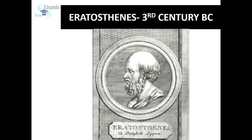At times when most people were still trying to figure out whether the Earth is flat or spherical, geniuses like Eratosthenes were able to measure the size of the Earth and also develop a network of horizontal and vertical lines to find the location of any place on Earth. Latitude and longitude were first discovered by the Greeks in the 3rd century BC. Eratosthenes was the first to discover latitude and longitude.